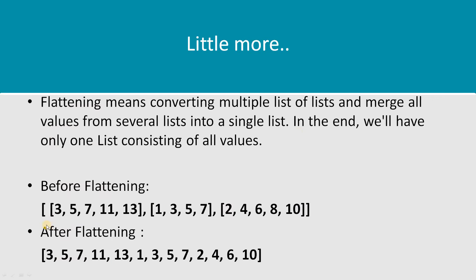Now let's look at this particular example. I have three elements in my list and each element is itself an Integer type list. After applying FlatMap, what I'm expecting is a stream of Integer type values. So let me open the IDE and write some code to understand how FlatMap really works.